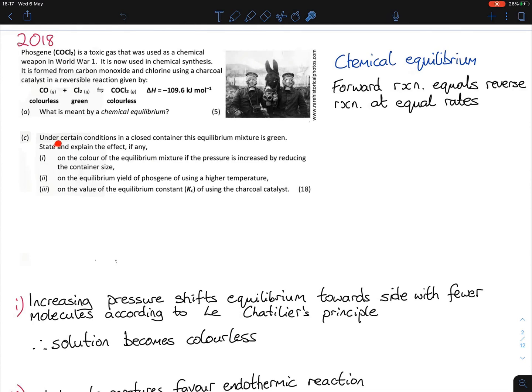Part C: Under certain conditions in a closed container, this equilibrium mixture is green. State and explain the effect on the color if the pressure is increased by reducing the container size. We have two molecules on the left-hand side and one molecule on the right-hand side. If we increase the pressure, it will drive the reaction towards the right-hand side because, according to Le Chatelier's principle, increasing pressure shifts equilibrium towards the side with fewer molecules.